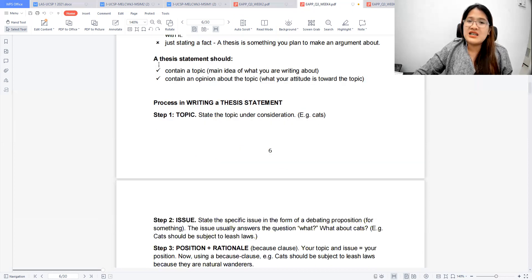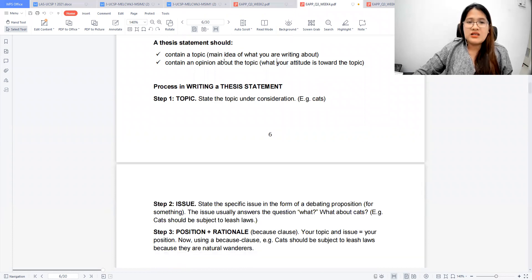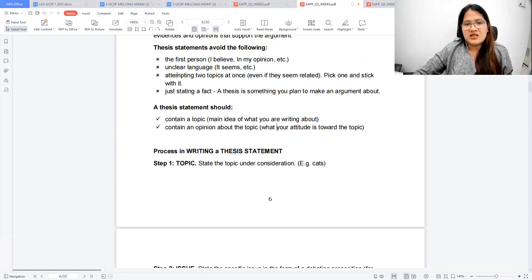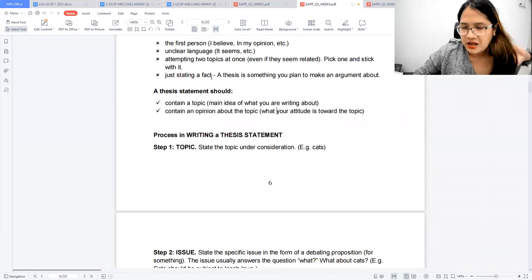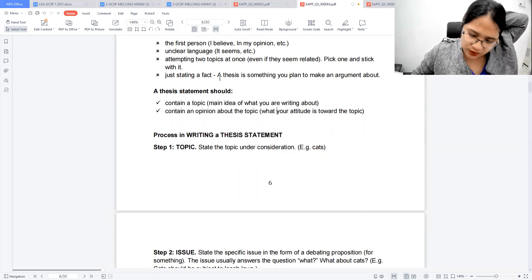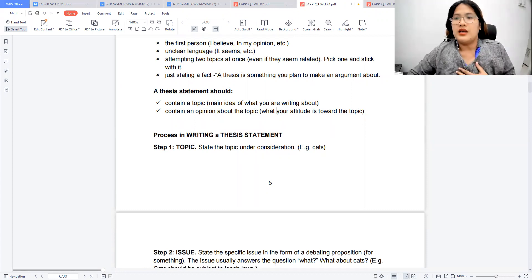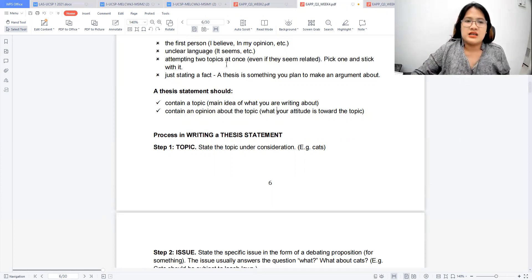So a thesis statement should contain a topic, a main idea that you're writing about, and contain an opinion about that topic. So what your attitude is towards the topic, what the main idea that you're holding about that topic. So generally, it's a statement that intends to persuade you as a reader. It presents an idea that you may or may not agree with.